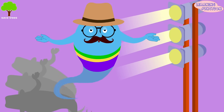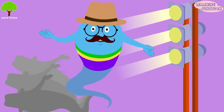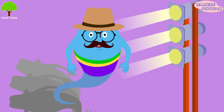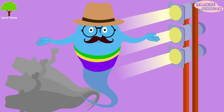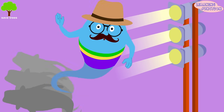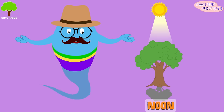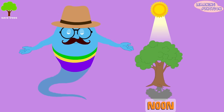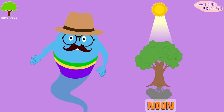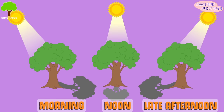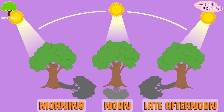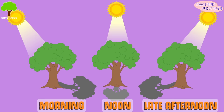You can have many shadows depending on the number of light sources. Shadows keep changing throughout the day — they are longest in the early morning and in the late afternoon. At noon, when the sun is directly overhead, the shadow is tiny or there is no shadow. The position of the sun changes throughout the day, which changes the angle at which the sun's rays fall on the ground. This is why you see different sizes and shapes of shadows.